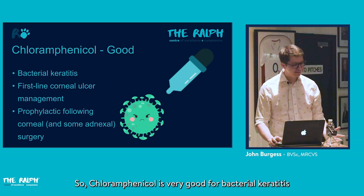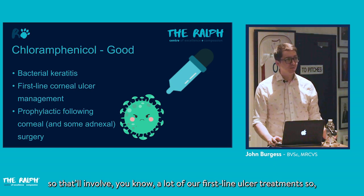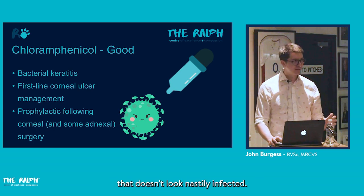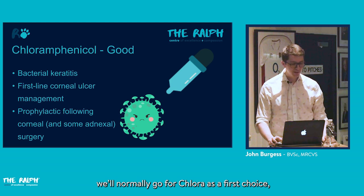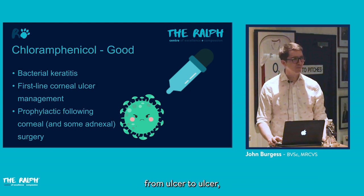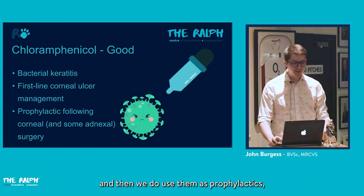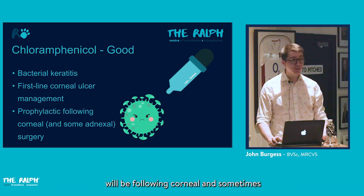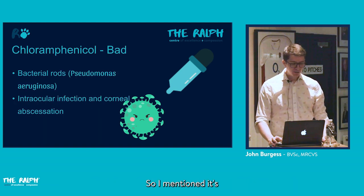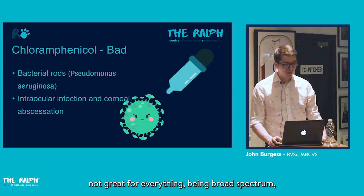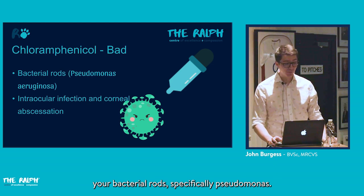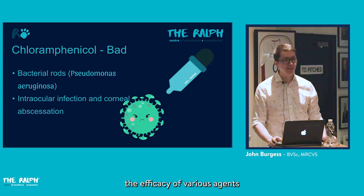Chloramphenicol is very good for bacterial keratitis and is our first-line ulcer treatment — anything from a SCED to a stromal ulcer that doesn't look nastily infected. Frequency of application is normally three to four times a day. We also use it prophylactically following corneal and some adnexal surgeries such as superficial keratectomies.